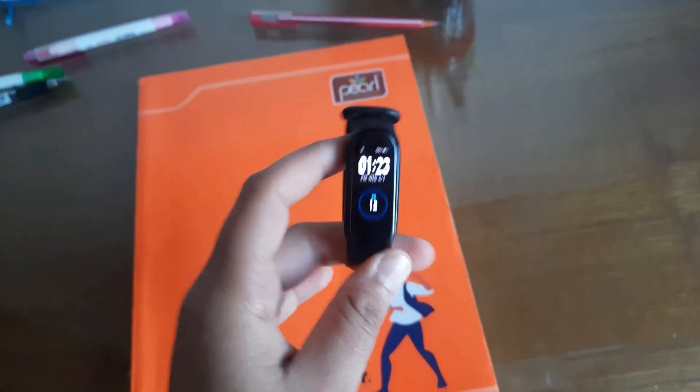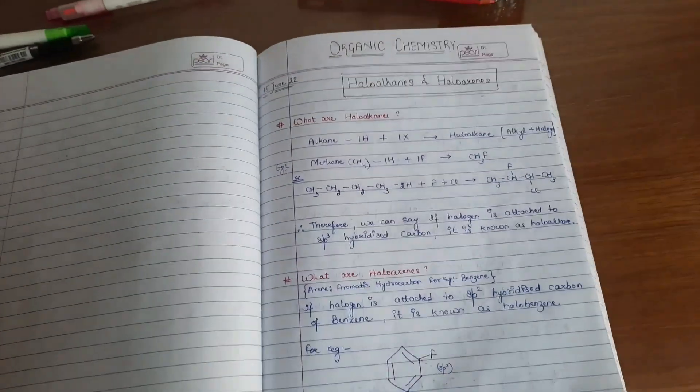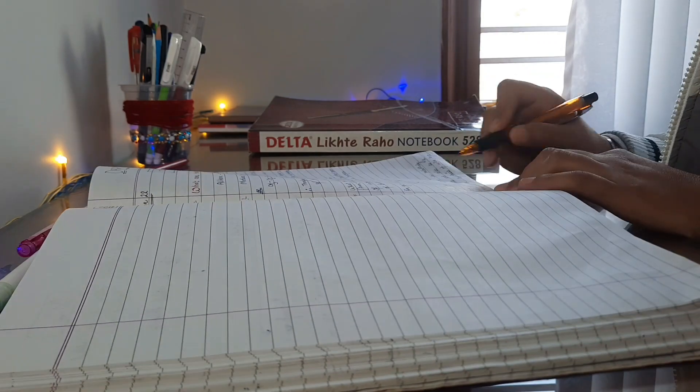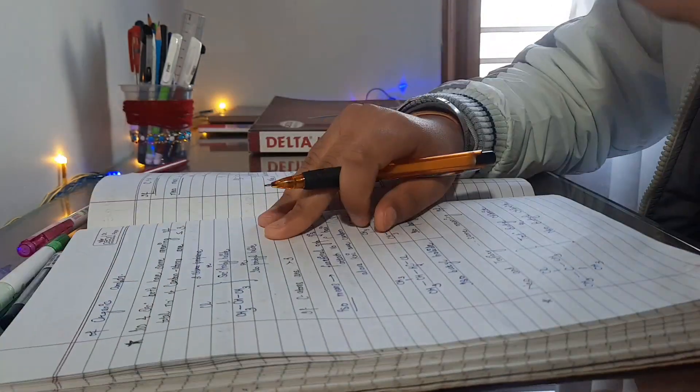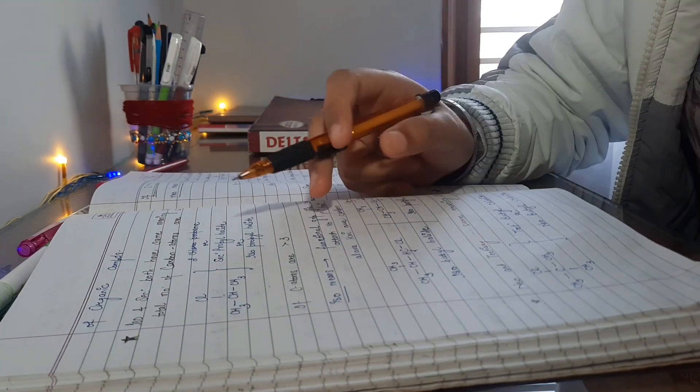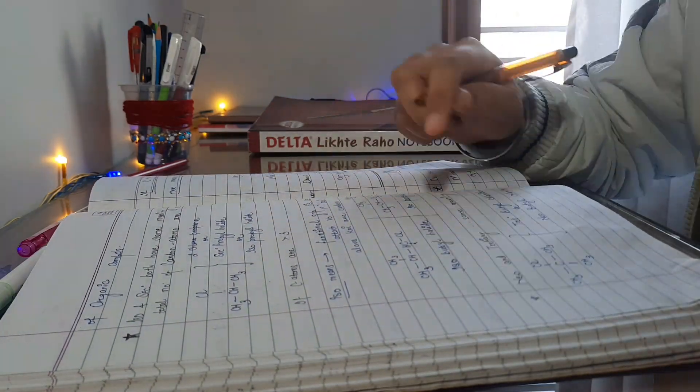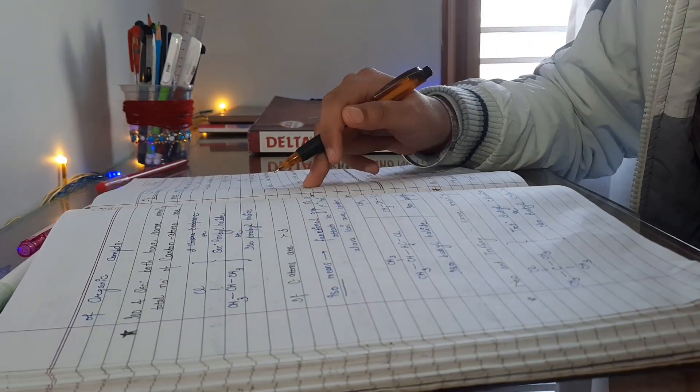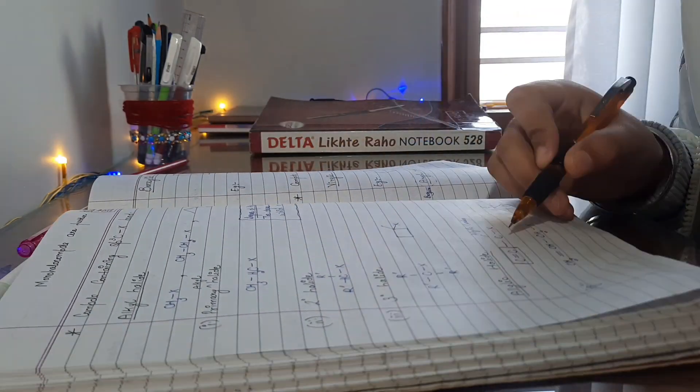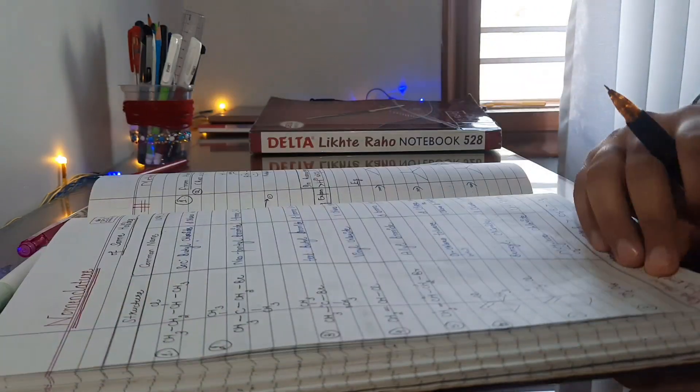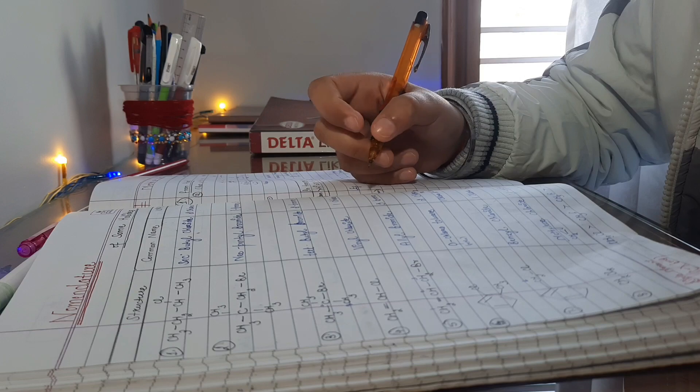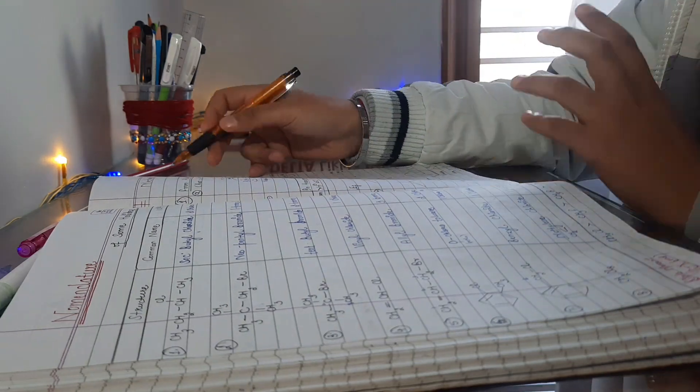Now it's around 1:23. I took my break and now I have to revise haloalkanes and haloarenes chapter. Actually my chemistry is very weak and it's very obvious because I never gave attention to chemistry. That's why it's taking revenge. So I decided to give daily two hours to chemistry, especially organic because major class 12 portion is of organic only.